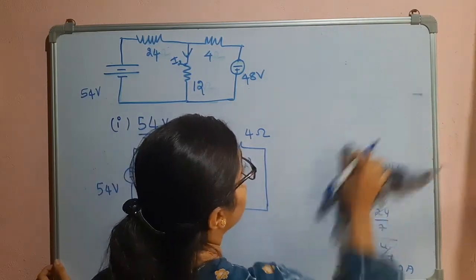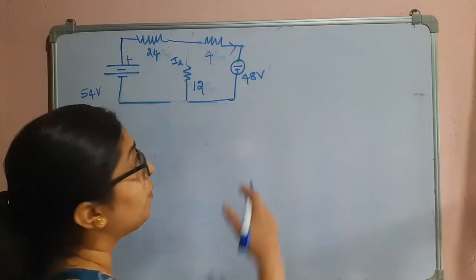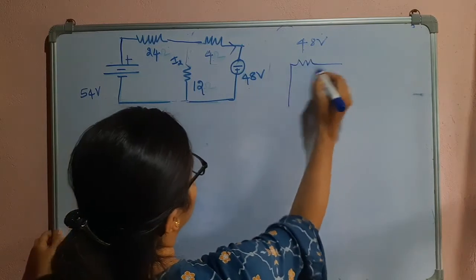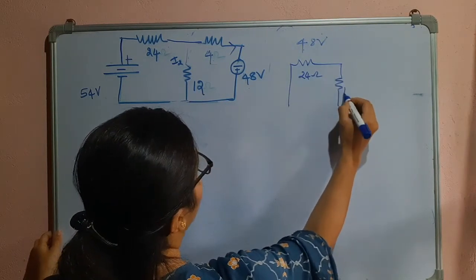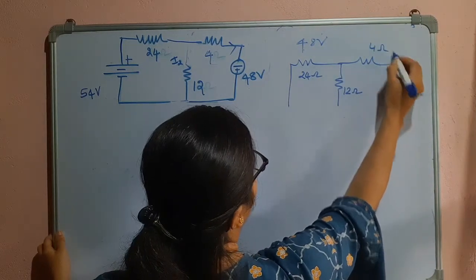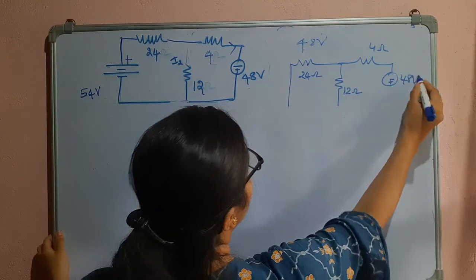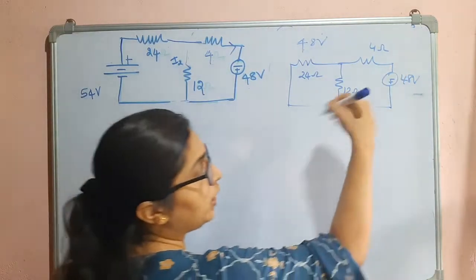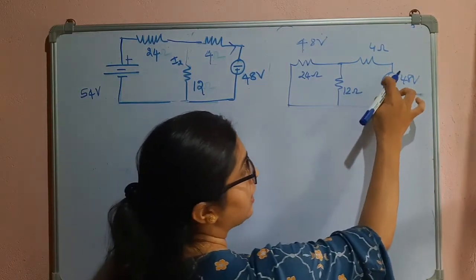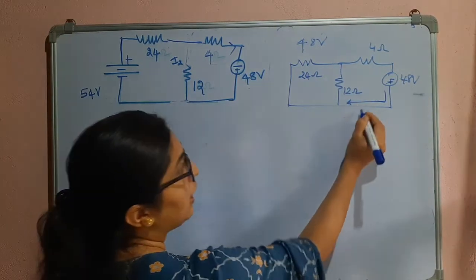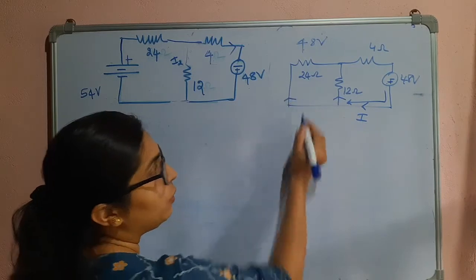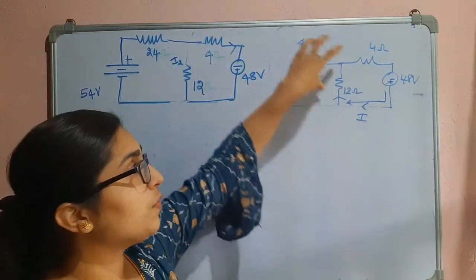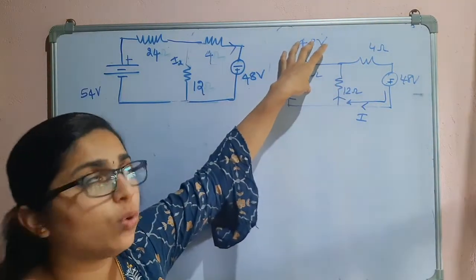Now let us consider the 48V voltage source. The 54V source will be shorted. The redrawn circuit has 24 ohm, 12 ohm, 4 ohm, and the 48V source with minus-plus polarity. Make sure you write the polarities carefully — here it is minus then plus. The current flows toward the positive terminal.